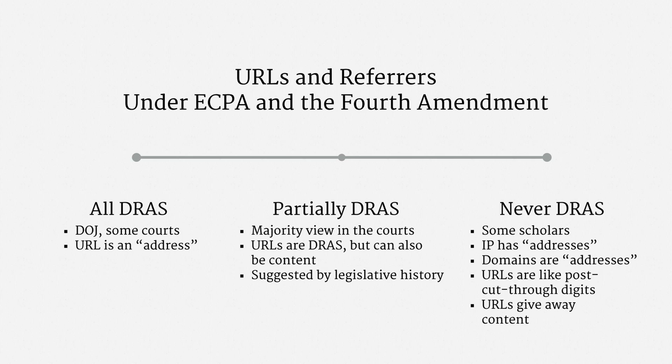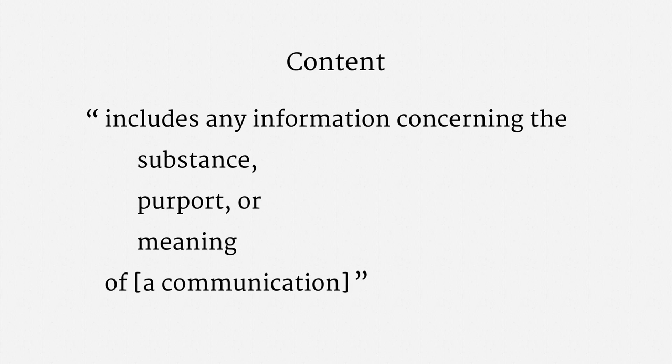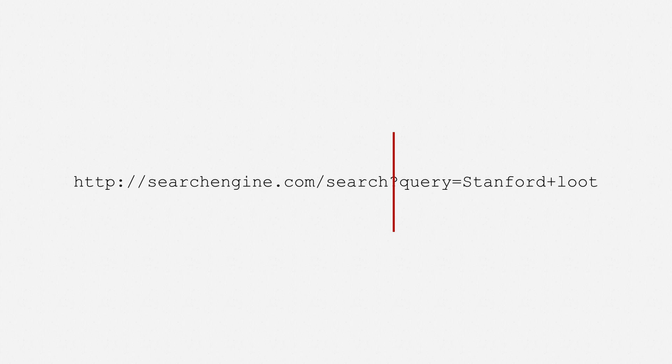The middle way poses a substantial challenge — it requires us to figure out which parts of a URL are DRAS and which parts are content. There is a definition of content in ECPA, but it's not very illuminating. In fact, a quick check of a thesaurus shows that substance, purport, and meaning are all just synonyms for content. So courts don't have much statutory guidance in this area, and the Supreme Court hasn't done much to clarify the meaning of content under the Fourth Amendment, either. At least this much seems fairly consistent in how courts are coming down: if a user affirmatively provides some sort of input, like a search query, then that's content.